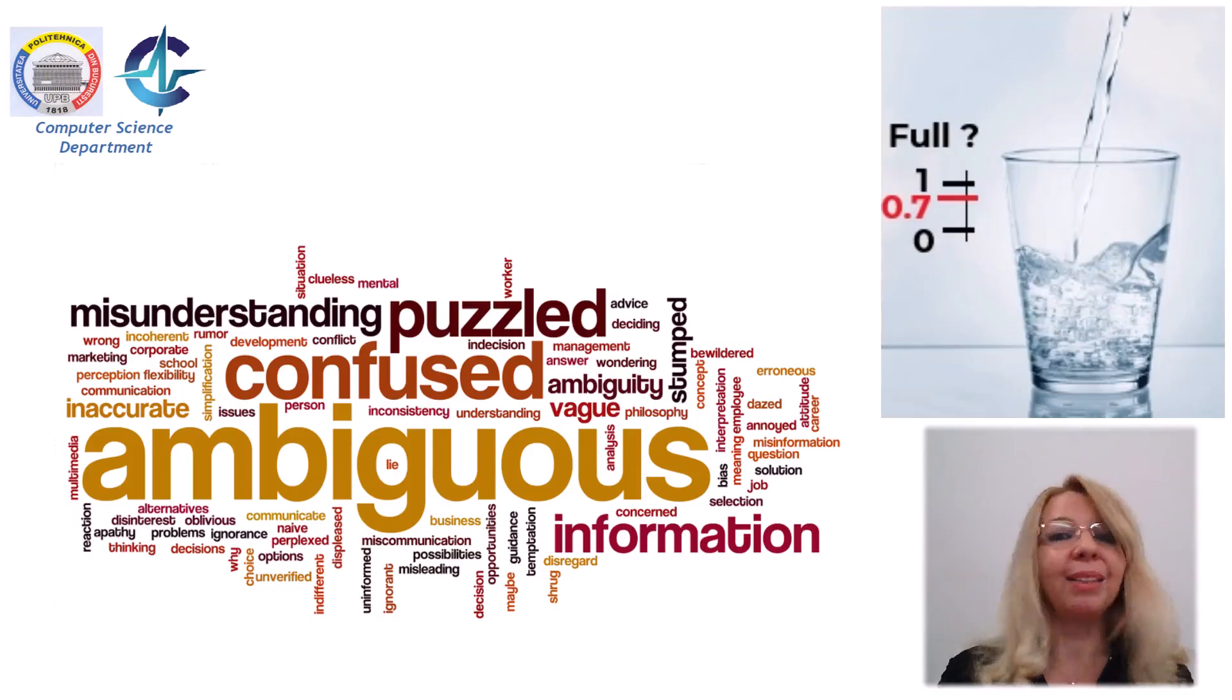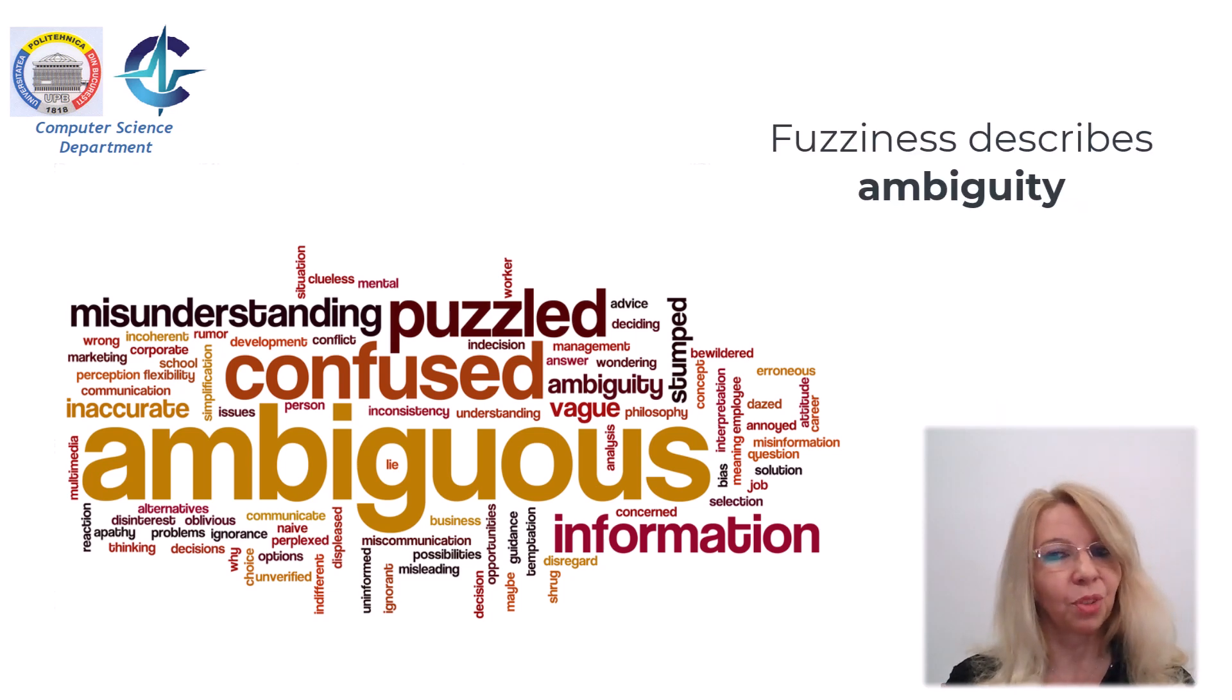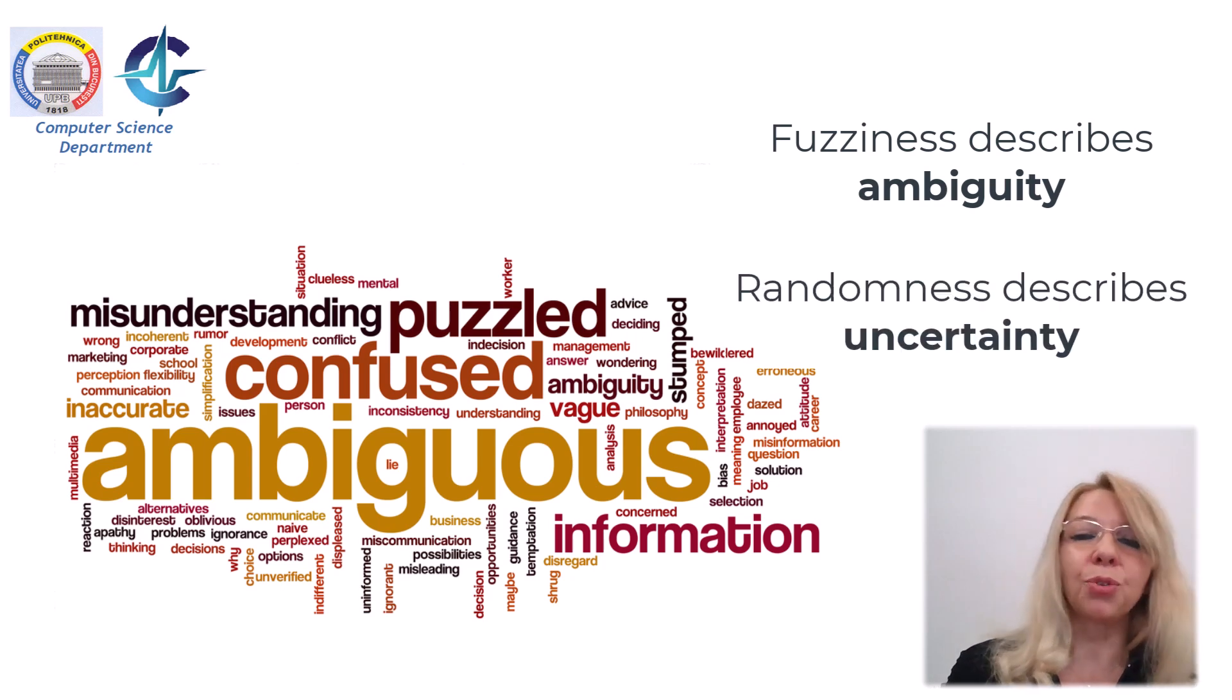Fuzzy methods provide formalization for describing such ambiguity in contrast to probability theory, which provides characterization of randomness. In fact, fuzziness describes the ambiguity of an event, and randomness describes the uncertainty in the occurrence of the event.